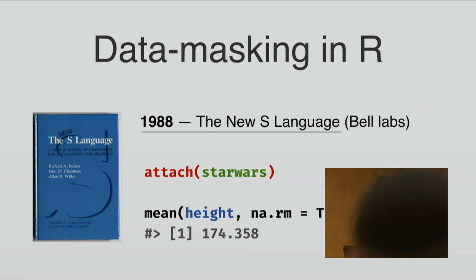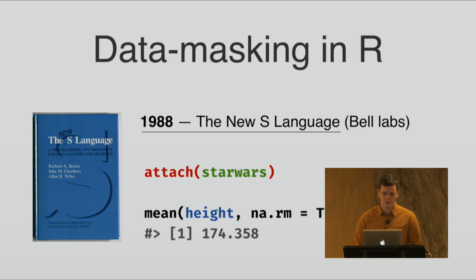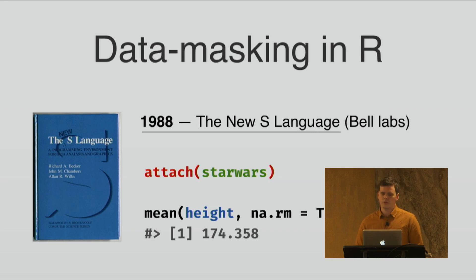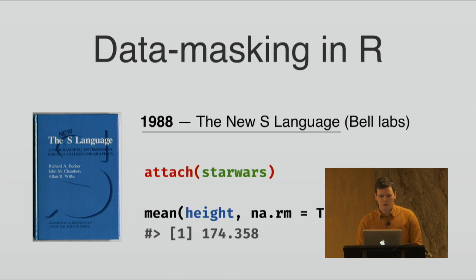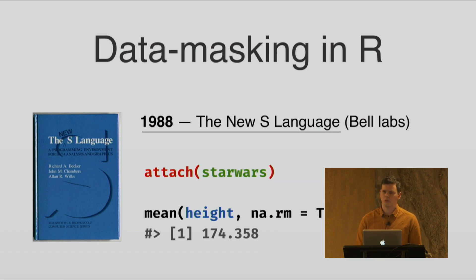I'd like to talk a little bit about the history of data masking in R. In 1988, the Blue Book was published that defined the S language, which is the ancestor of R. And a lot of the things that we still use were in that book. One of the first manifestations of data masking was in the attach function, which allows you to take a dataset and attach it to the search path the same way that you do with a package. It's the idea that the data frame is the important scope and that if you are working interactively with R, you want to be able to work with the data directly.